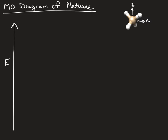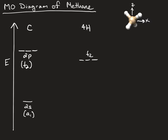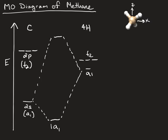We can now generate our molecular orbital diagram, with carbon here and the four hydrogens over here. We have our 2p orbitals, which transform as T2, and our 2s, which transforms as A1. On the hydrogen side you have your T2 SALCs and your A1 SALCs, forming in-phase and out-of-phase combinations on the A1s and T2s.